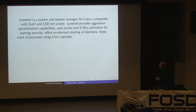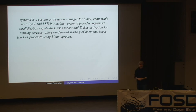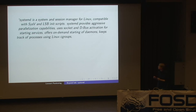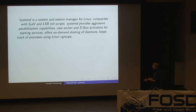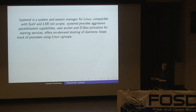It keeps track of processes using Linux C-groups. Linux C-groups is a kernel interface introduced about ten versions ago. C-groups is short for control groups. This is very useful not only to start and stop services, but to keep precise track of every process that a service spawns, which can be quite a lot. For example, if Apache starts up, it can start a gazillion CGI scripts. We use Linux C-groups to keep track of them. More detail about that later.